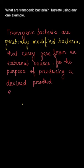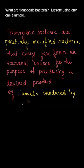Transgenic bacteria are genetically modified bacteria that are carrying a gene from an external source with the purpose of producing a desired product that is coded by the gene. For example, humulin produced by E. coli.